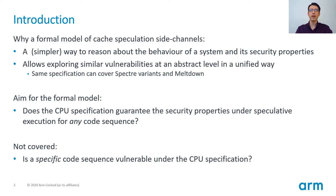The aim is to create a significantly simpler, abstract model of CPU speculative execution and define its confidentiality and integrity properties. We then want to check whether the security properties are upheld by the CPU specification for any reasonable code sequence. Such a model allows us to explore related vulnerabilities and workarounds at an abstract level and in a unified way. As we'll see, the model can explain the current Spectre and Meltdown vulnerabilities.